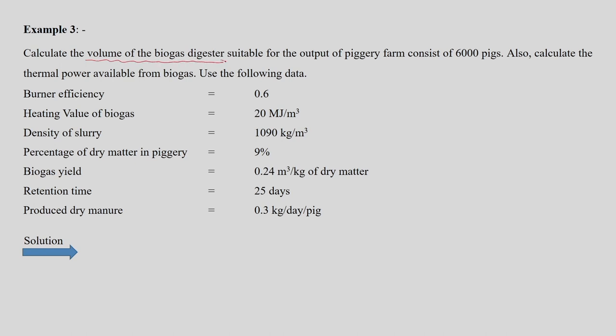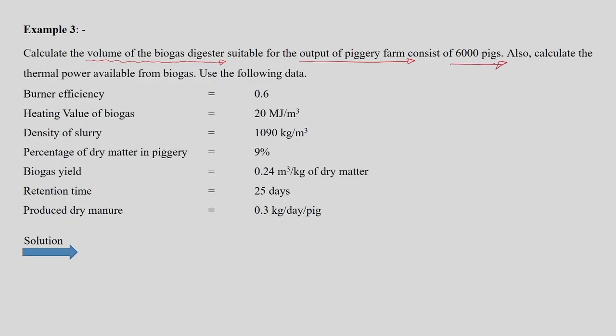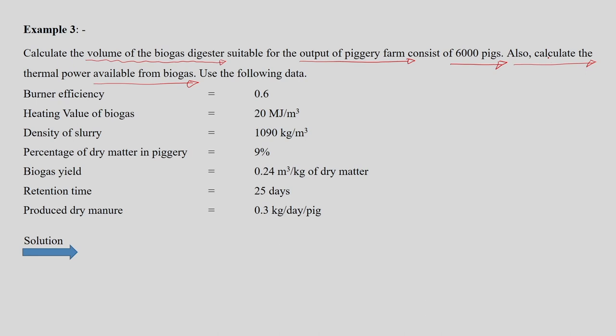Looking at the statement of the first example, we need to calculate the volume of a biogas digester suitable for the output of one pig farm. There is one pig farm and its output is utilized to produce biogas. We also need to calculate the thermal power which is available from the gas produced.